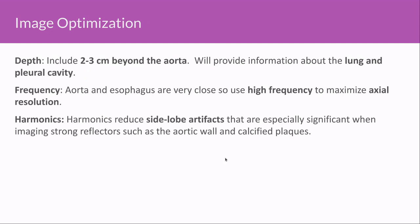Image optimization for aortic imaging, especially the descending aorta, involves minimizing depth. I recommend keeping two to three centimeters beyond the aorta, as you may see a pleural effusion or consolidation that provides useful perioperative information. You can typically use the highest frequency your probe is capable of, since the aorta and esophagus are very close. I recommend using harmonics to minimize sidelobe artifacts, which are especially significant with strong reflectors like the aortic wall or calcified plaques.